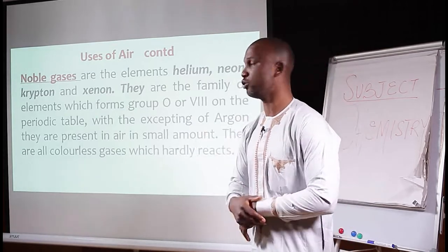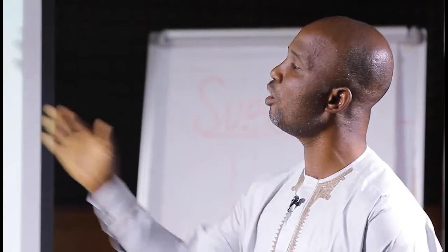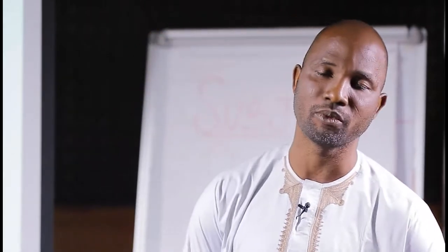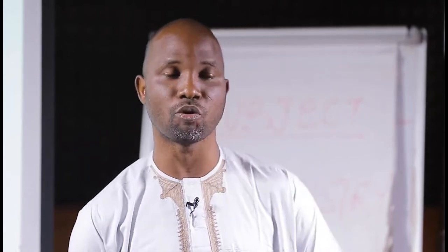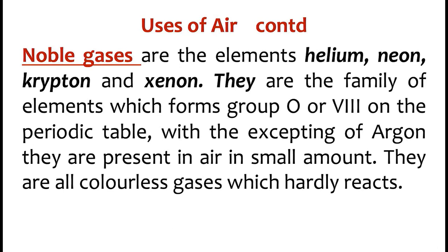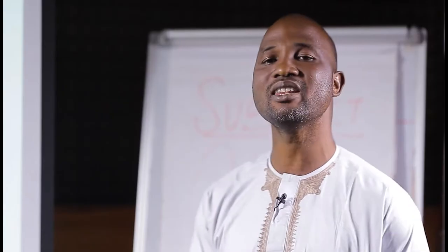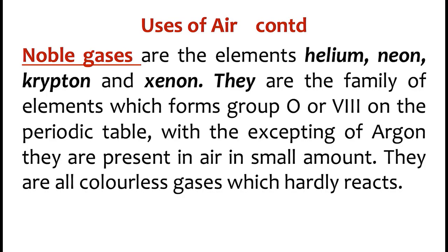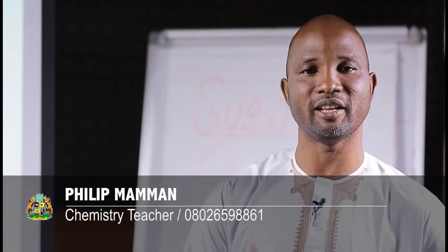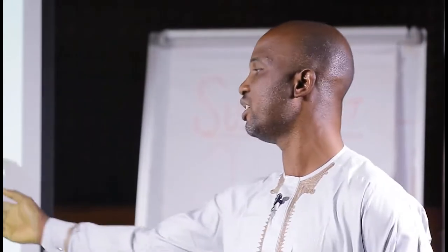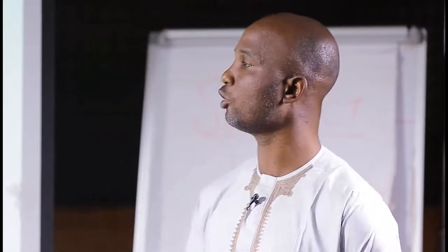We also have uses of noble gases. When we say noble gases, we are talking about those gases that belong to group 8 or group 0 on the periodic table — they cannot lose or gain any electron. The family includes helium, neon, krypton, and xenon. With the exception of argon, they are present in air in small amounts. They are all colorless gases which hardly react, because they have attained their octet state or duplet state — meaning they are stable, having completed their outermost shell with 8 electrons, except helium which fills its outermost shell with 2 electrons.